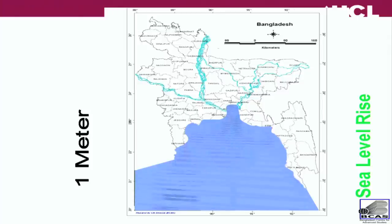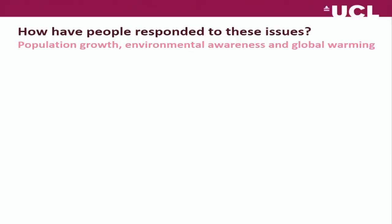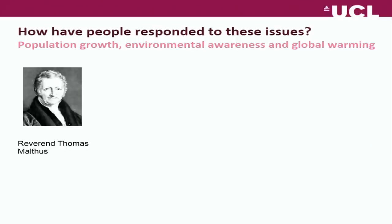Concern about population growth is certainly not new. The Reverend Thomas Malthus, in 1798, wrote his famous essay on the principle of population, arguing that growth in population would always outstrip food production, and that the only ways to keep the two things in check were through natural disaster or, as he put it, misery and vice — he was, after all, the Reverend Malthus.